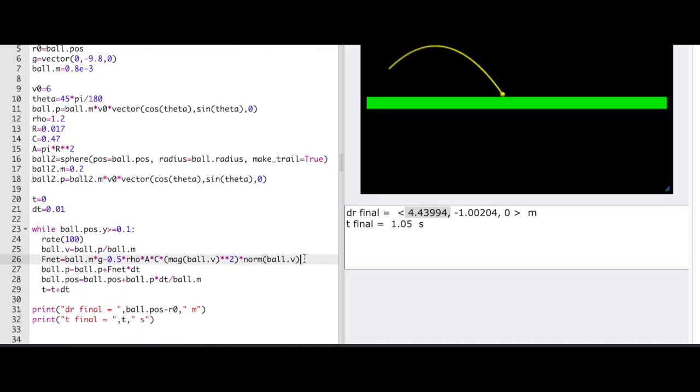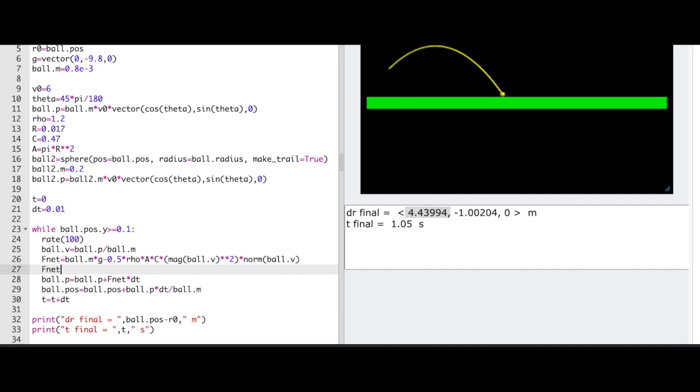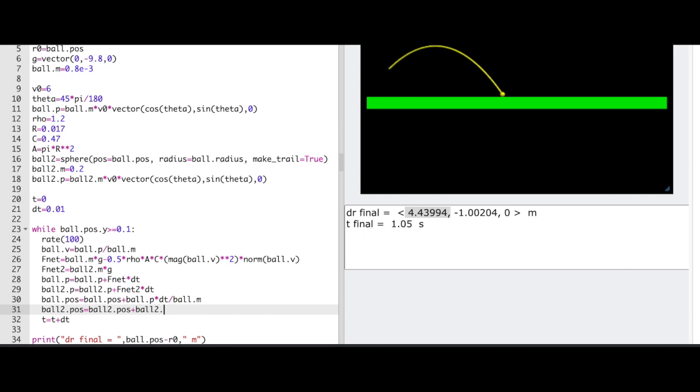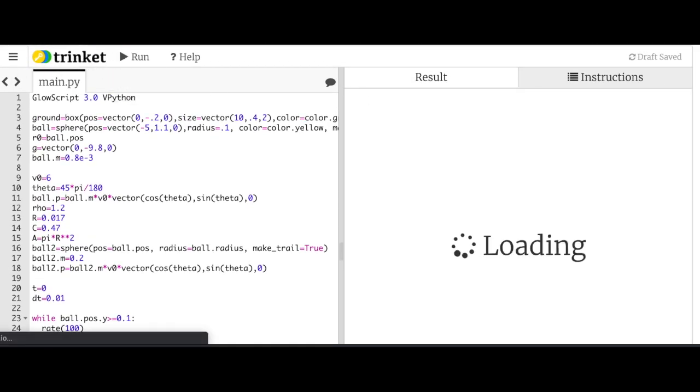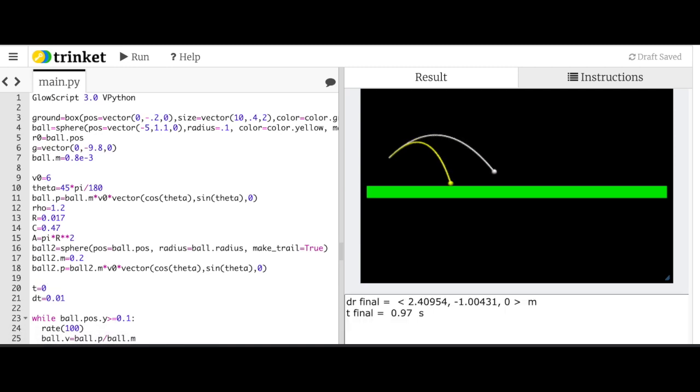Now, I need to go down here. And I'm going to model both of these at the same time. So, I'm going to say fnet 2 equals ball 2.m times g. And then down here, I'm going to say ball 2.p equals ball 2.p plus fnet 2 times dt. And then I need to update the position. Ball 2.pos equals ball 2.pos. It's ball 2.p times dt divided by ball 2.m. I feel like I'm going to make a mistake. But I'm going to run it anyway. Let's just see what happens. What do you think? Yeah, check that out. You know, I just won. I really did. Okay. I really did win.